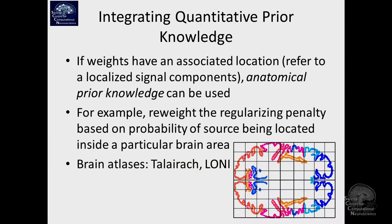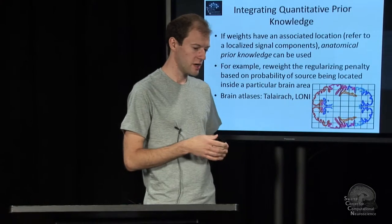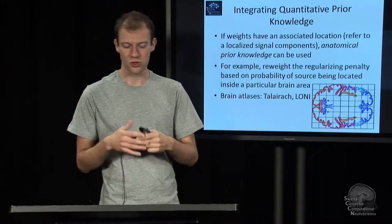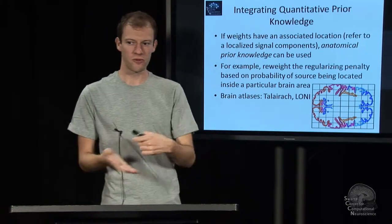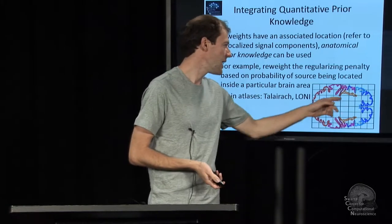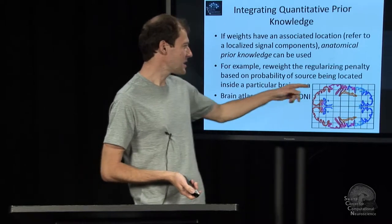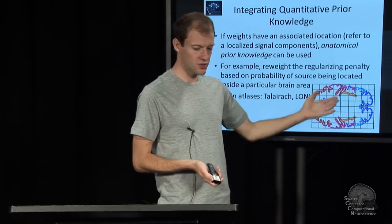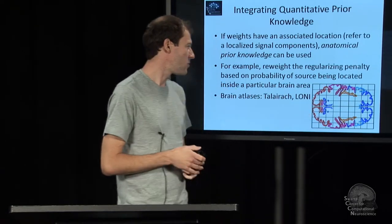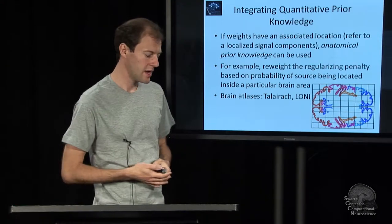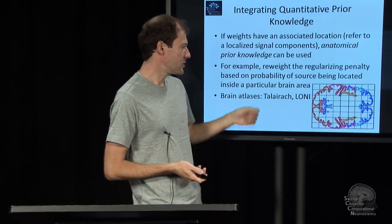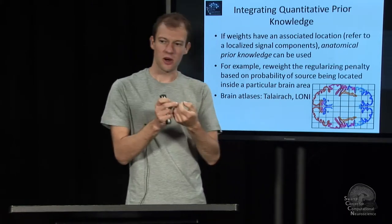That is practical if you know something in advance about what parts of the brain are relevant. You might know something about the anatomy of the brain, like thinking that your sources should come from the hippocampus, and there are atlases which say which locations are part of the hippocampus. So if you have a parameter slot